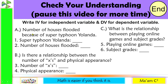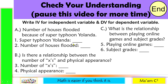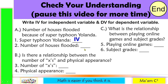Letter A: number of houses flooded because of super typhoon Yolanda. Which comes first? Of course, it is super typhoon Yolanda — this is our independent variable. What happens next after that? The number of houses flooded — this is our dependent variable.